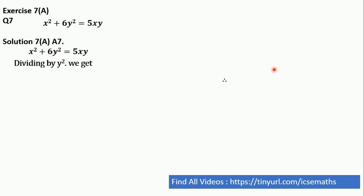So first of all, we need to divide this by y square. So once we divide this, we will be getting x square by y square plus 6y square by y square is equal to 5xy by y square.